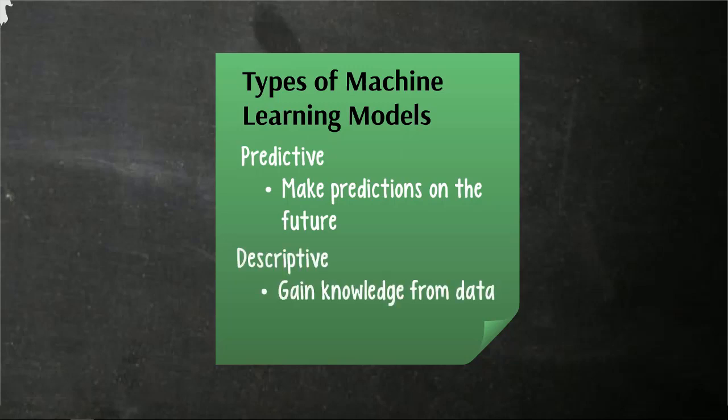So the second class of machine learning models that we will talk about are descriptive models. And these are simply trying to gain knowledge from data. And so this sounds more like our general definition of machine learning that we just gave in the previous slide. However, in descriptive models the difference is that we are not going to have an expected output necessarily.